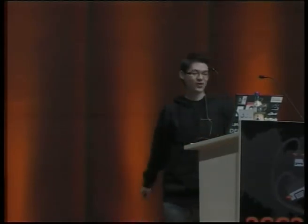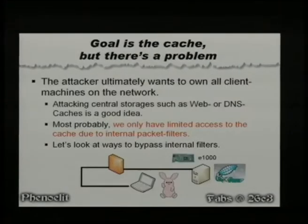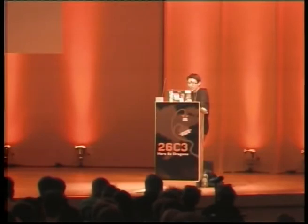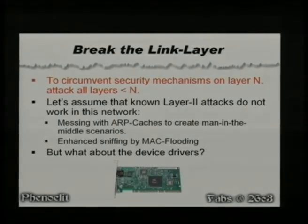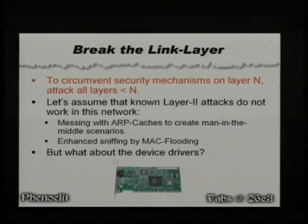You are now inside the network, and on we go. What we now want to do is ultimately attack the cache. But we want to be able to send anything we like to the cache, and there's still this internal packet filter — so that's what we're going to try to break. If you want to break something at layer N, it's always best to look down a few layers and see if you can break things beneath. What you want to break is on layer 3 and 4 — IP-based packet filtering. So why not go down to the link layer and see what you can do there?